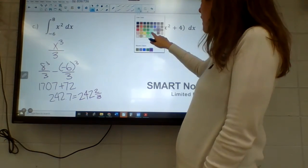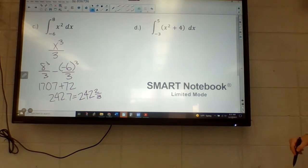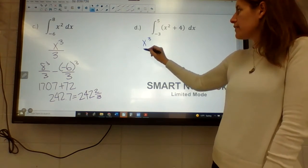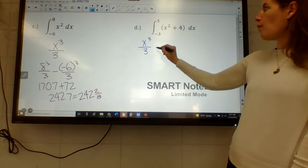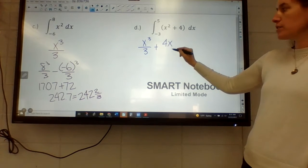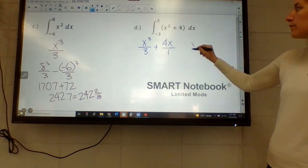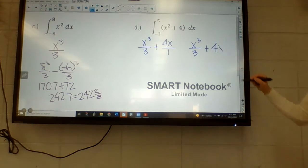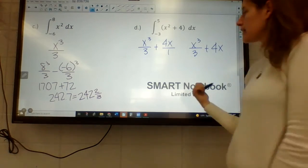Alright, and then here—again, same, actually the same first half of this, but we can't forget about the 4. So this becomes plus 4x¹ divided by 1, so I have to do f(5) minus f(−3).